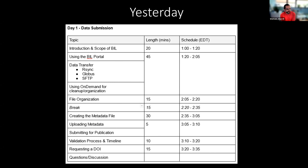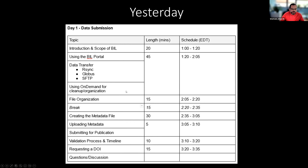Welcome back to Day 2. For those who joined us yesterday, we briefly talked about the scope of the Brain Image Library, the kinds of data we're collecting, and how we're making those data available. We talked about how to access data through the BIL portal, how to send data to BIL using various services, and about using On Demand, which allows you to interact with the data for cleanup and organization. We also discussed how we suggest you organize files to be uploaded to BIL.